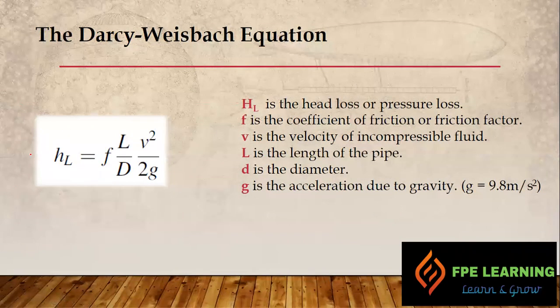Where HL is the head loss or pressure loss, F is the coefficient of friction, L is the length of the pipe, D is the diameter, and G is the acceleration due to gravity, which is 9.8 meters per second squared.